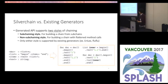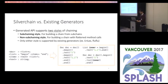The idea to translate grammar into a fluent API is not new, and several tools have been proposed, such as ALX and FULFUL. The distinctive property of our tool, SilverChain, is that the generated API supports two styles of chaining. The first one is subchaining style, which is a style for building a chain from partial subchains. The other is a style for building a chain with flat method calls without subchaining.